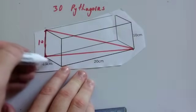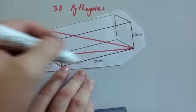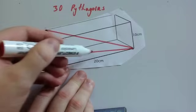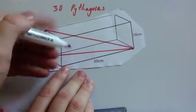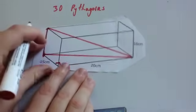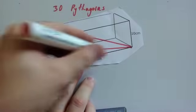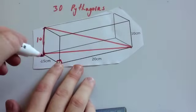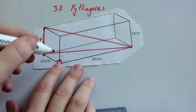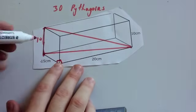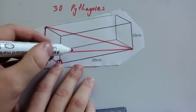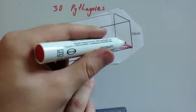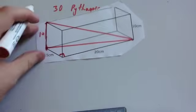The rectangle is 15 centimetres across and 20 centimetres long. Using Pythagoras' theorem, you can find the longest side of this right-angled triangle on the bottom. You can use Pythagoras' theorem to find the length of the diagonal. Once you find the length of the diagonal, you can use the 10 and that to find the longest side of the 3D triangle going through the shape.